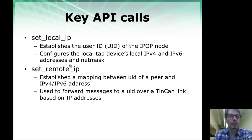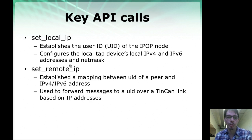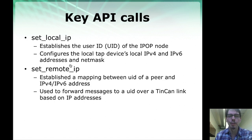SetLocalIP allows the controller to establish the user ID of the IPOP node running locally, as well as the IP address and network mask that the local IPOP node should use. That's done once for the node that's running. SetRemoteIP is done every time a new node joins the network — it establishes the mapping used by Tincan to look up, based on IP address, which link a message should be forwarded to.